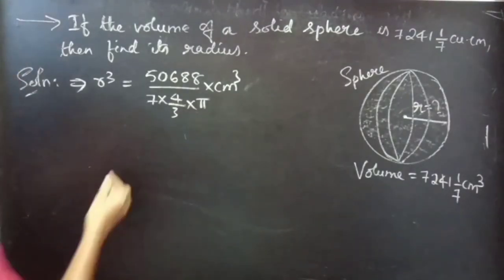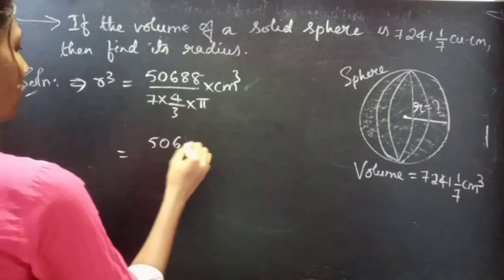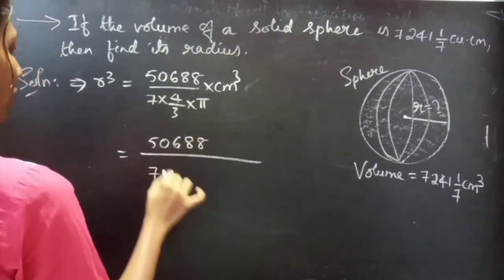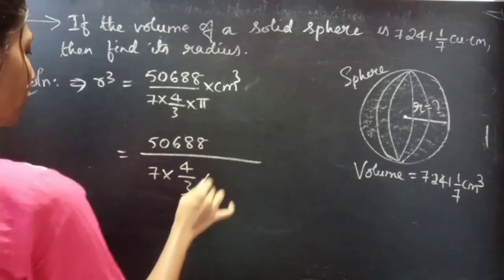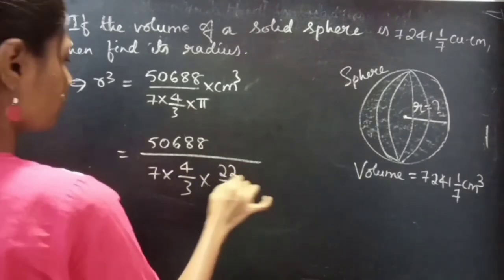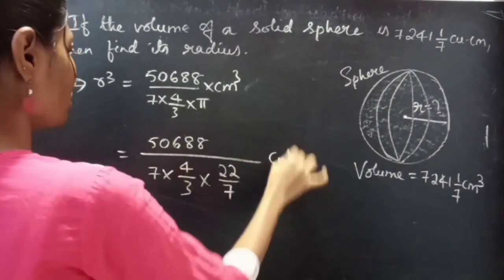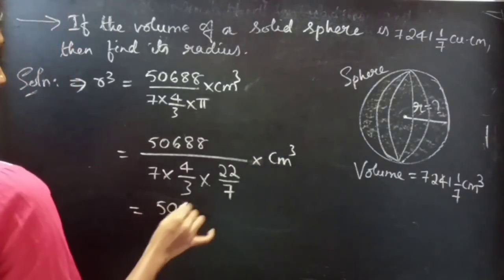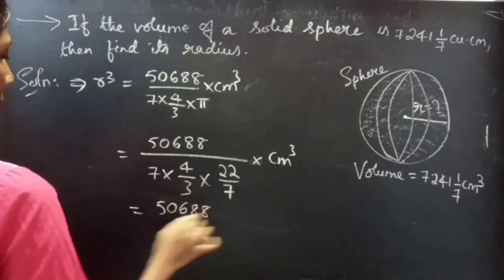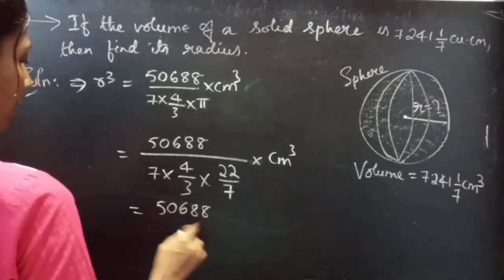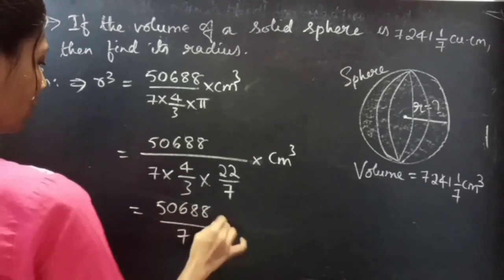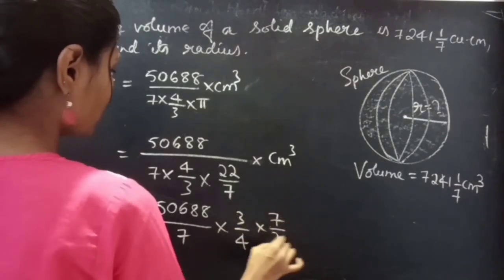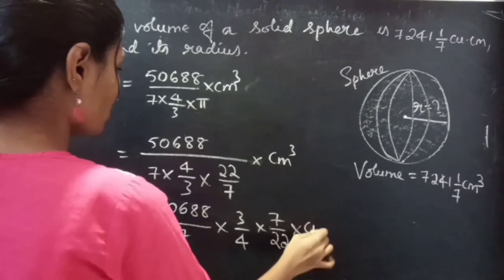So this equals 50,688/7 into 3/4 into 7/22 centimeter cube, since π is taken as 22/7. Cancel the 7s. We get: r³ equals 50,688 into 3 divided by (4 × 22) centimeter cube.